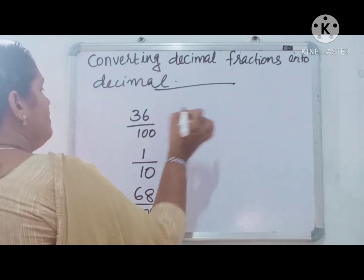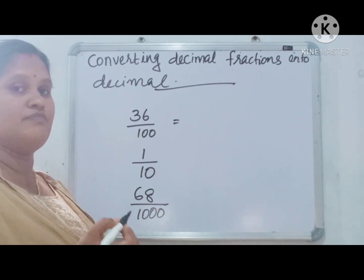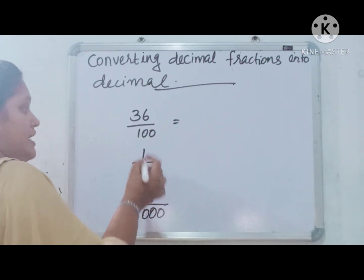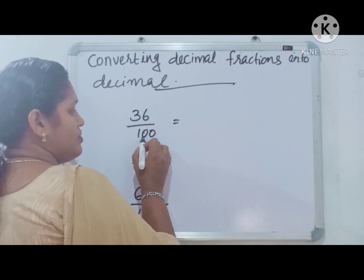How do we convert this decimal fraction into decimal number here? First we have to count the zeros in the denominator. How many zeros are there? In 100, 2 zeros.